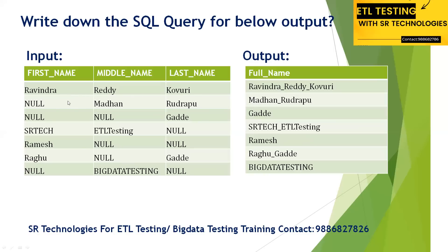We have three values. Then the first column is null, and we have 'Madhan' and 'Rudrappu.' The third row has null for first name, null for middle name, and 'Gardha' as last name. The fourth row has 'Aesthetic,' 'ETL Testing,' and null for last name. Row five: 'Ramesh' with middle and last name null. Row six: 'Ragu' with null middle name and a last name value. The last row has null first name, 'Big Data Testing' as middle name, and null last name.